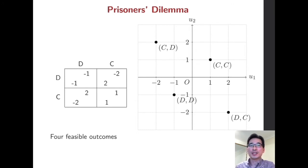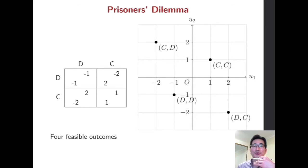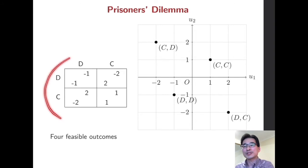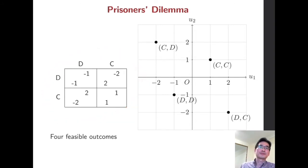Each player has a preference over the outcomes, which is represented by numbers, so-called payoffs. This payoff matrix specifies their actions.